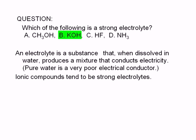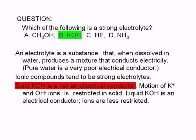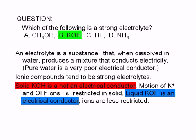Solid potassium hydroxide is not an electrical conductor. That's because the motion of the ions is restricted in a solid. However, liquid potassium hydroxide is an electrical conductor. The ions have more freedom of movement in a liquid.